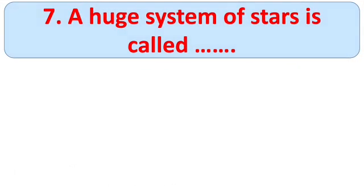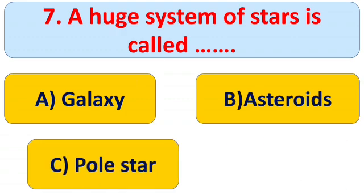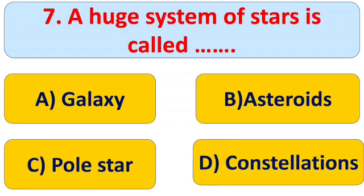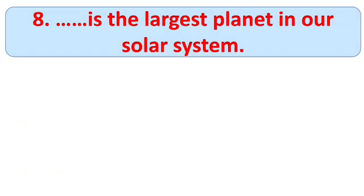Question number seven: a huge system of stars is called blank. Options: A) Galaxy, B) Asteroids, C) Pole Star, and D) Constellations. The right answer is A) Galaxy. A galaxy is a huge system of billions of stars and clouds of dust and gases.